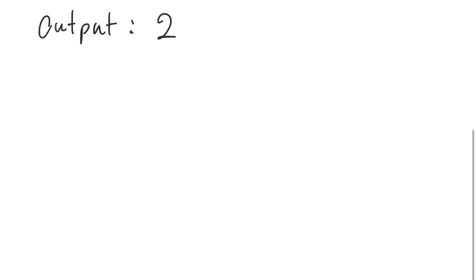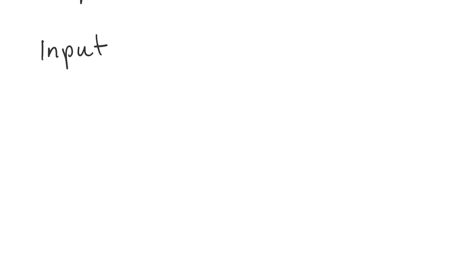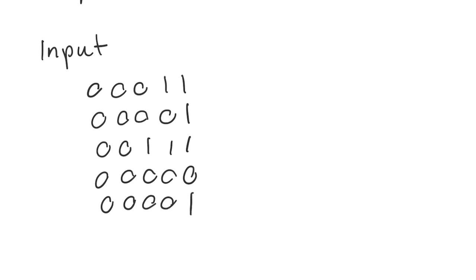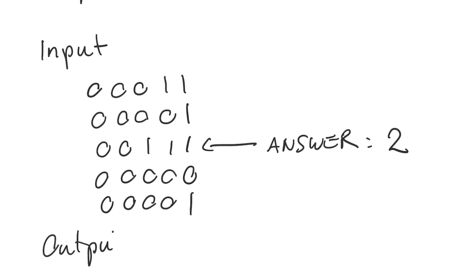Let's do another example. As input, we have a 5x5 matrix: [0,0,0,1,1], [0,0,0,1,0], [0,0,0,0,0], [0,0,0,0,0], [0,0,0,0,0]. The row with the maximum number of ones is again row 2 (0-indexed), so the output is 2.